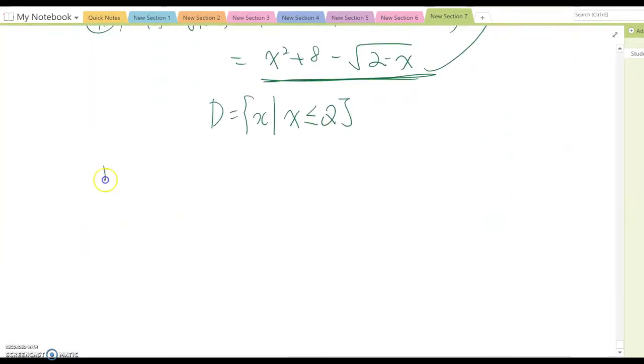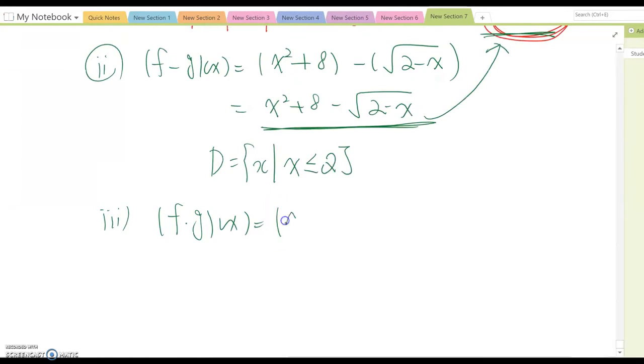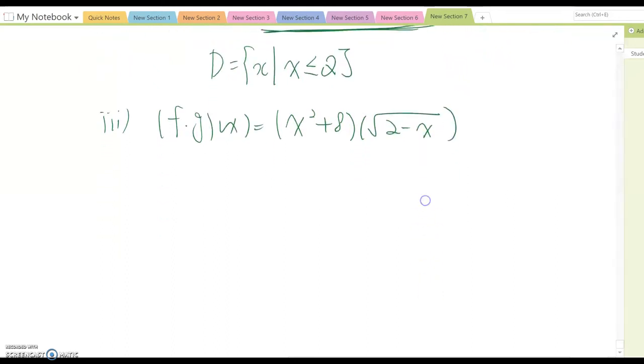So, okay, what about number three, now we are multiplying here, so f times g of x, which means we can make x squared plus 8 times square root 2 minus x.